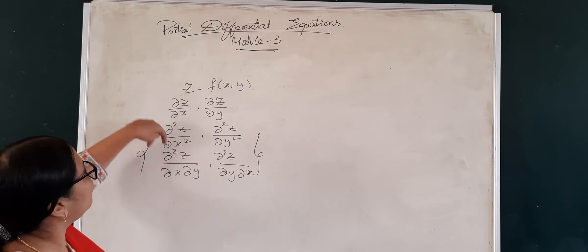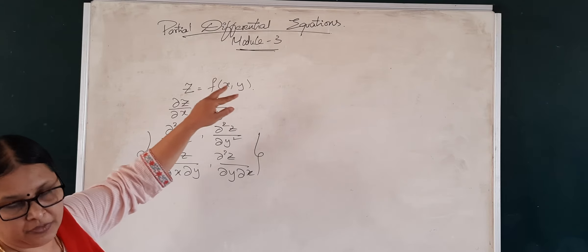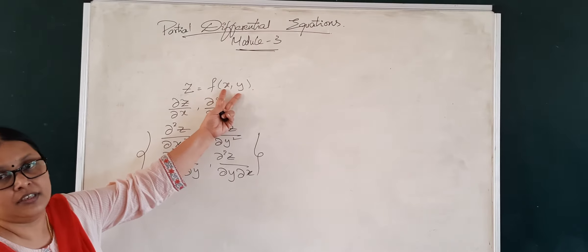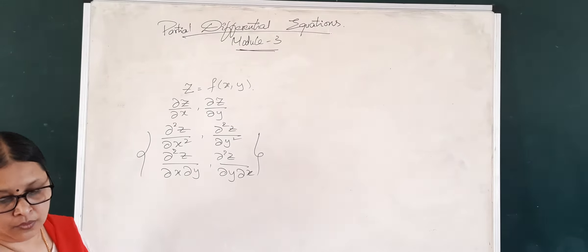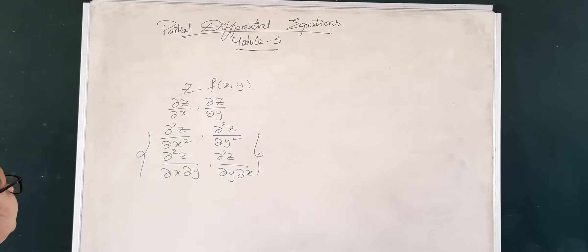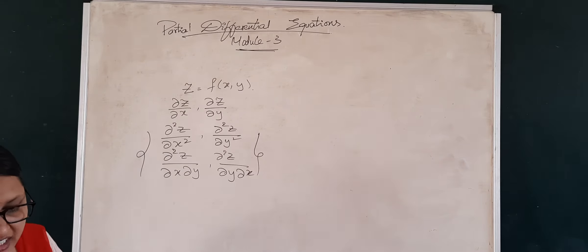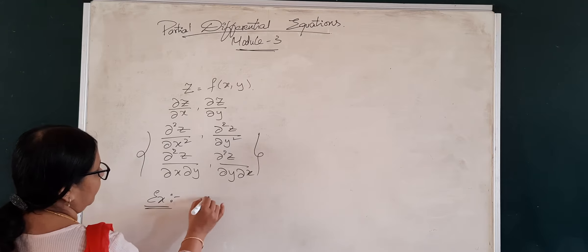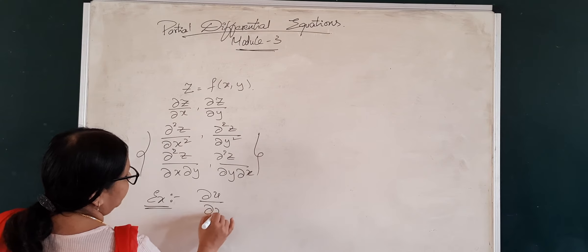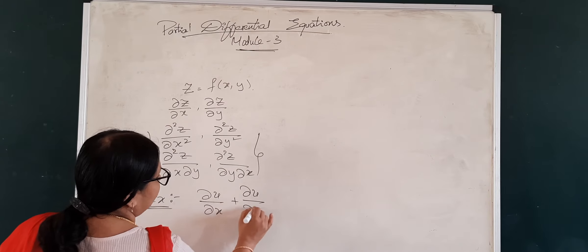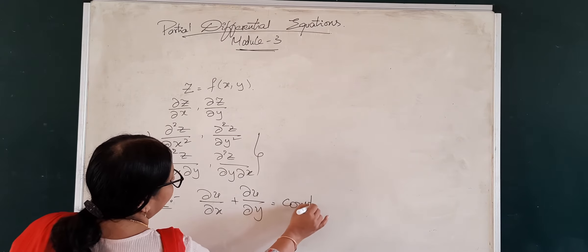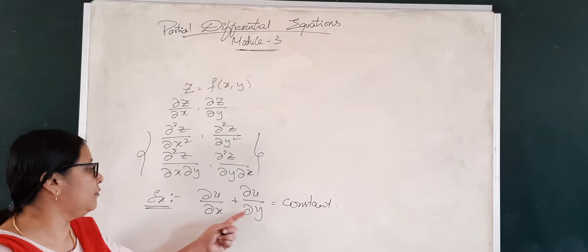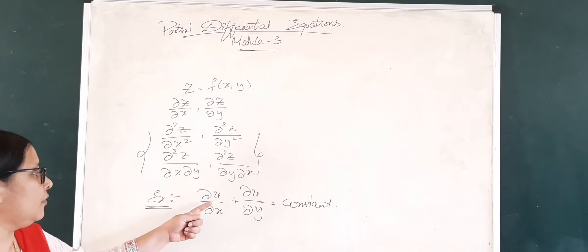Any equation which involves a function of two or more variables and the partial derivatives with respect to at least one of these independent variables is said to be a partial differential equation. For example, we can have something like dou u by dou x plus dou u by dou y equals a constant — a simple partial differential equation involving both first order partial derivatives.